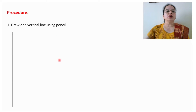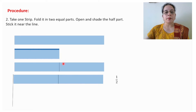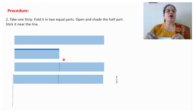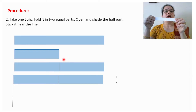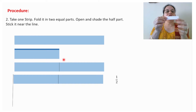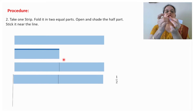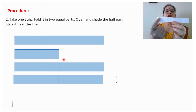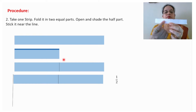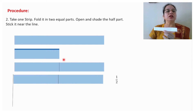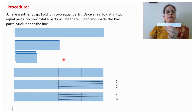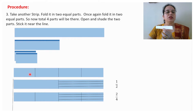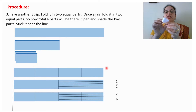First step: draw a vertical line using a pencil in your notebook or sheet wherever you are doing this activity. Then take one strip and fold it into equal parts — just fold it into equal parts, make a proper crease, open it so that you will see one crease. The remaining half part you can shade, and after that you need to stick it near the line. This is the one strip folded in two equal parts.